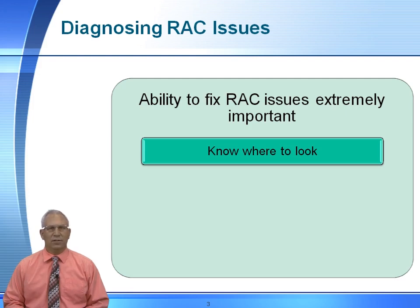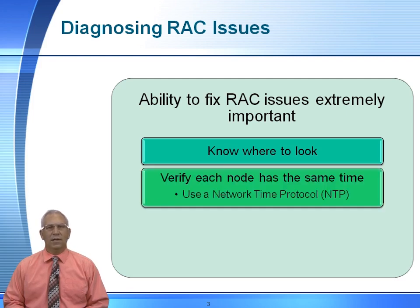In prior versions of Rack, like in 10, 11, and 11gr2, we knew specifically where to look. Now in Oracle 12, they've changed the location. A couple of things to keep in mind: it is very important that each individual node has its own or is associated to a network time protocol. These nodes cannot be off even a few milliseconds or a Rack eviction may occur.